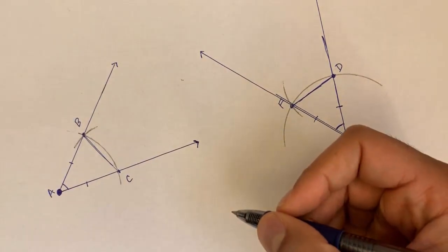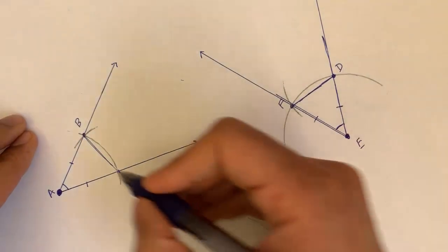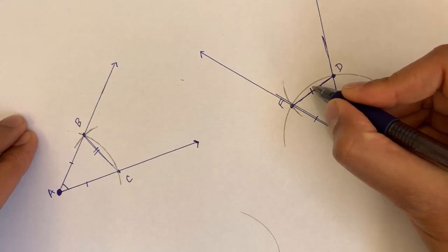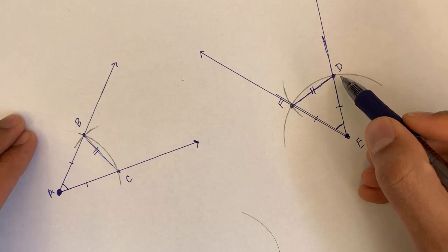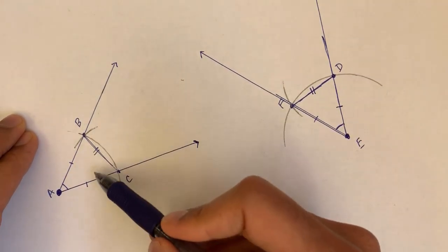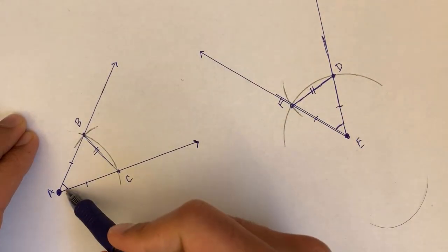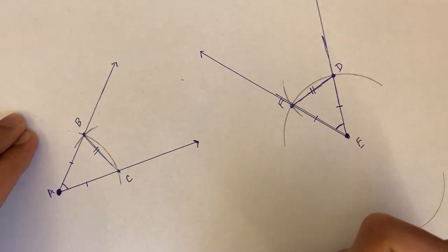And then the second time, when we adjusted our compass radius, we now know that the distance between BC is the same as the distance between FD. So it's very clear that we have congruent triangles. All three sides have the same measure, and therefore, the corresponding angles must be congruent as well.